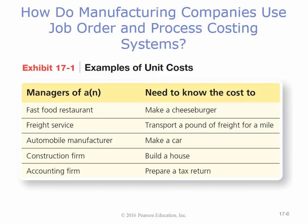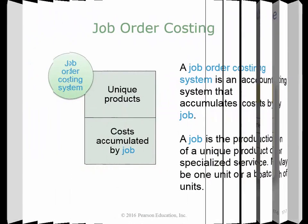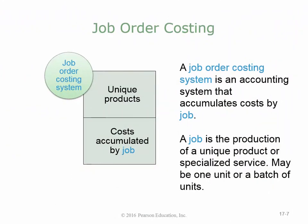All of these different companies have to know the cost of their products. A job is the production of a unique product or specialized service — it may be one unit or a batch of units. Whether it's one unit or a batch depends on the nature of the company. Some things are produced in batches, others one at a time.